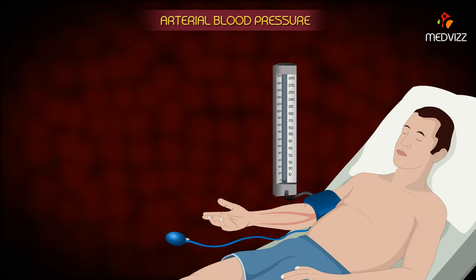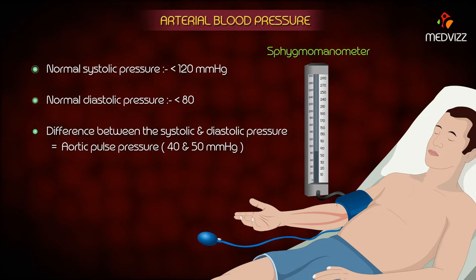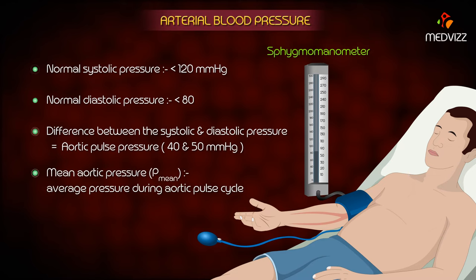When blood pressure is measured using a sphygmomanometer, the upper value is the systolic pressure and the lower value is the diastolic pressure. Normal systolic pressure is less than 120 mmHg and normal diastolic pressure is less than 80 mmHg. The difference between the systolic and diastolic pressures is the aortic pulse pressure, which typically ranges between 40 to 50 mmHg. The mean aortic pressure is the average pressure during the aortic pulse cycle.